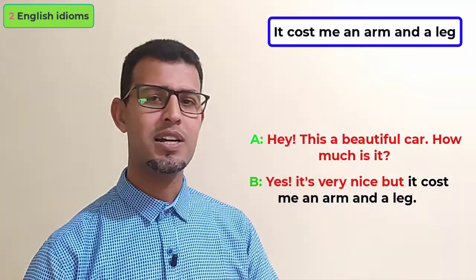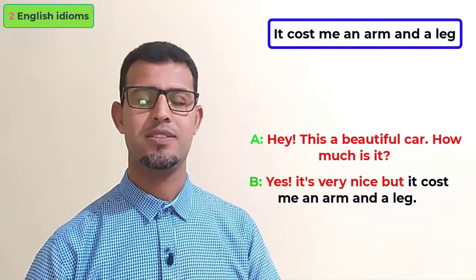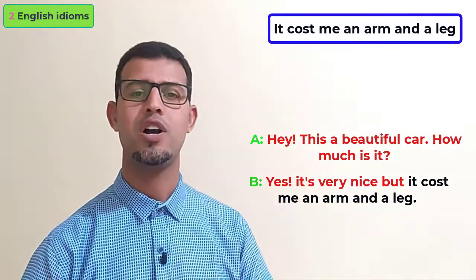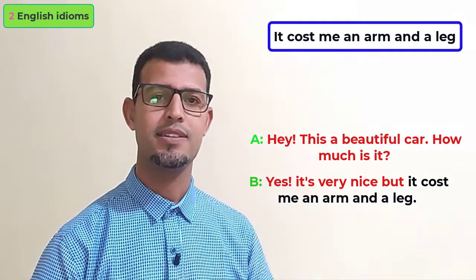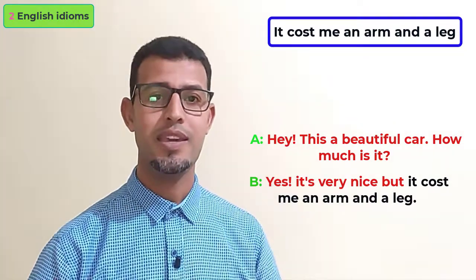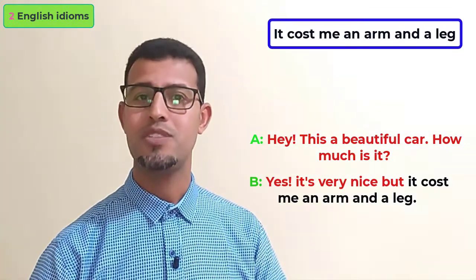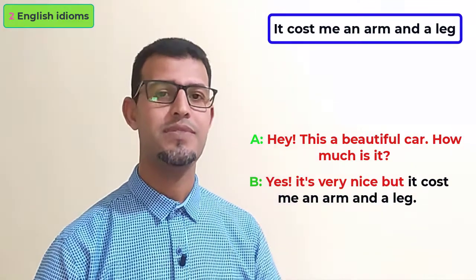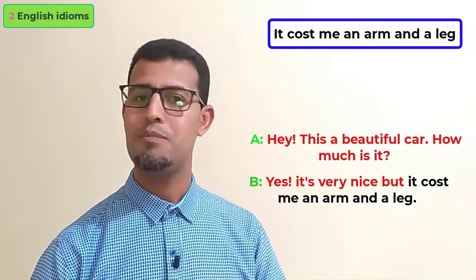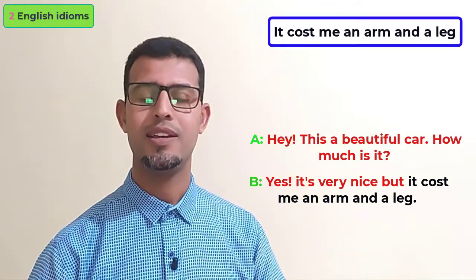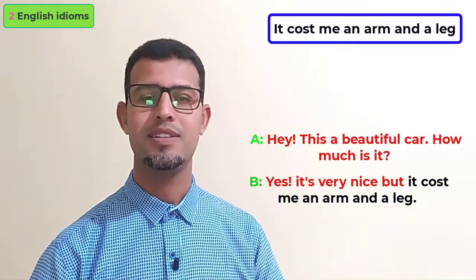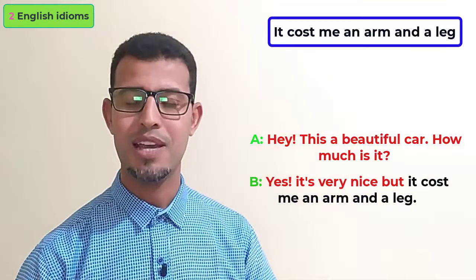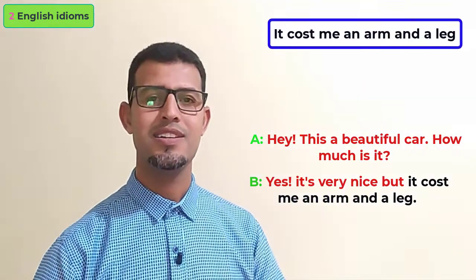Person A says: 'Hey, this is a beautiful car — how much is it?' Person B replies: 'Yes, it's very nice, but it costs me an arm and a leg.' So did you guess the meaning of 'it costs me an arm and a leg'?